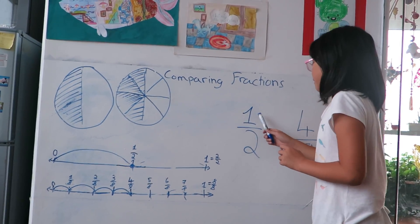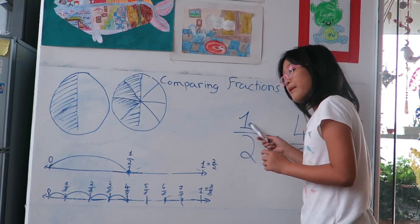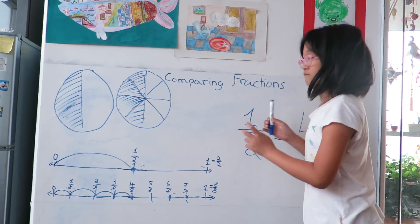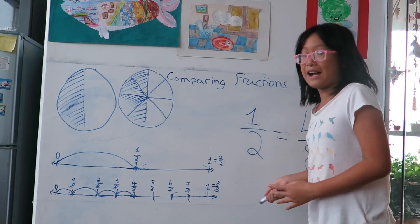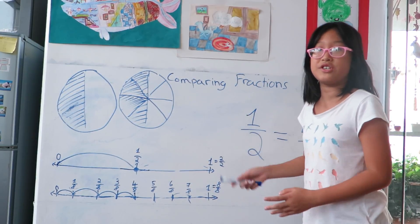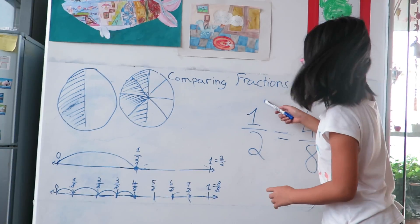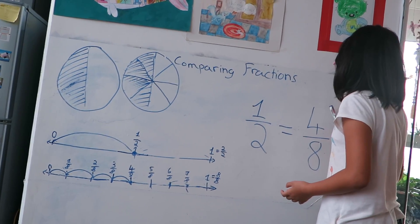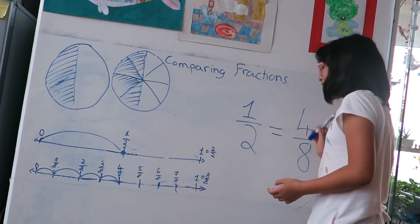If the double of the numerator equals the denominator, then that means the fraction is equal to a half. So look: one plus one is two, four plus four is eight.